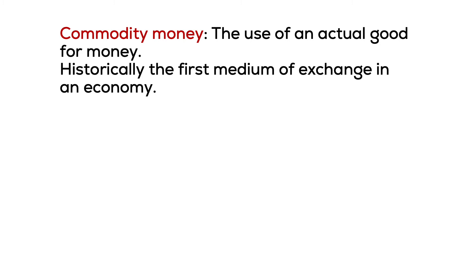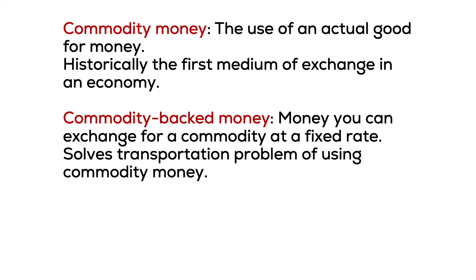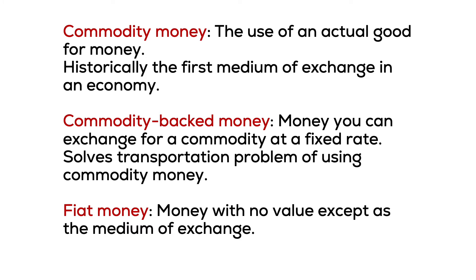An improvement over a barter economy is commodity money. This is how our trajectory of history has gone with respect to money. In this situation, buyers and sellers agree to use a specific good as money. Examples of this are tobacco, gold, or silver, historically. Commodity-backed money is, for instance, the US dollar was historically backed by gold, though it no longer is. Today, the US dollar is considered fiat money. It has no value beyond the fact that it is a medium of exchange and is not tied to gold or any other commodity.